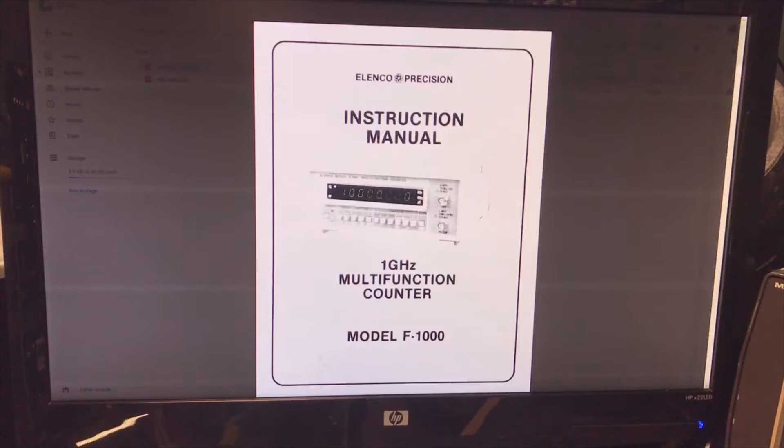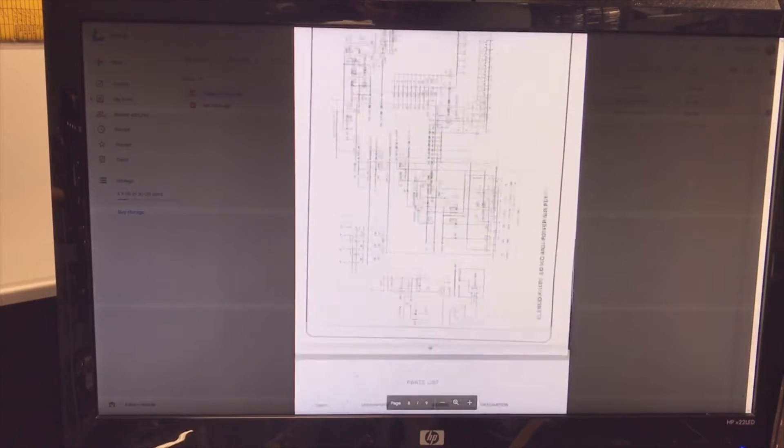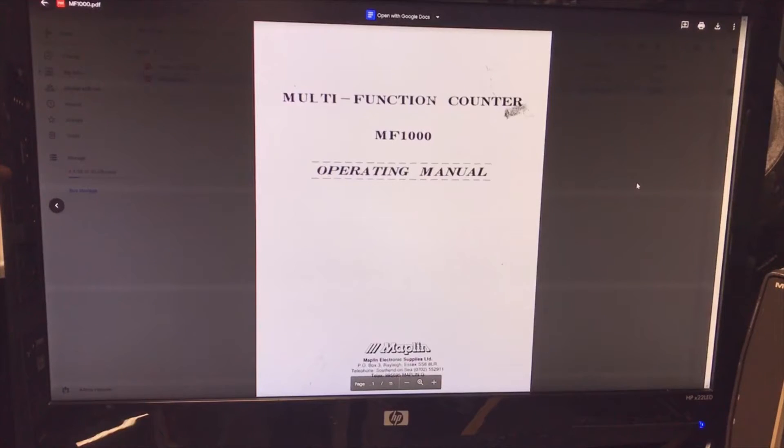It also comes as an Elenco model F1000, and I found a service manual for that. So let's go through this manual for the calibration. Elenco was so kind to put the schematic diagrams with it, that's very nice. They are a bit more fuzzy about the calibration, but luckily I found another brand that did have the proper calibration sheets.